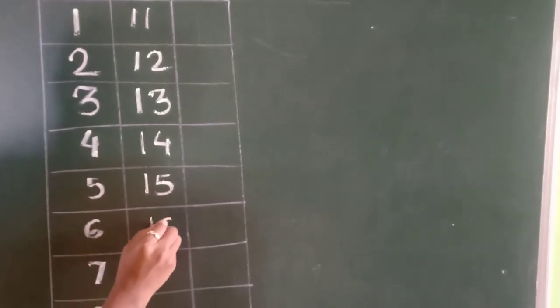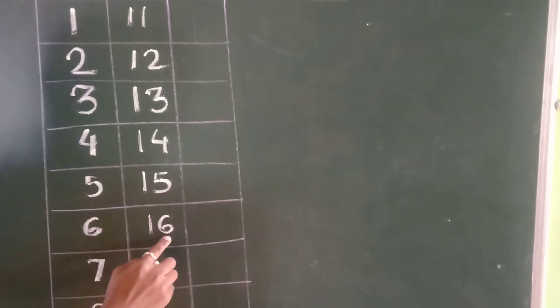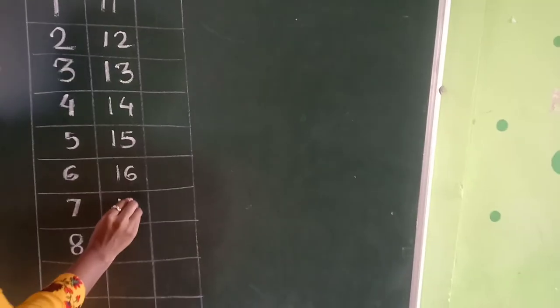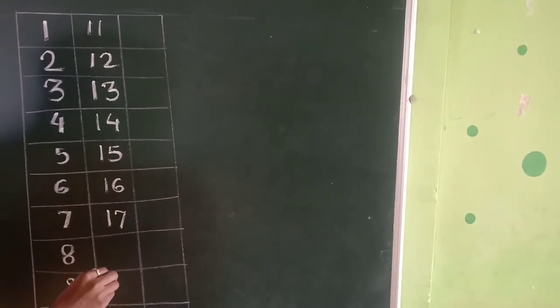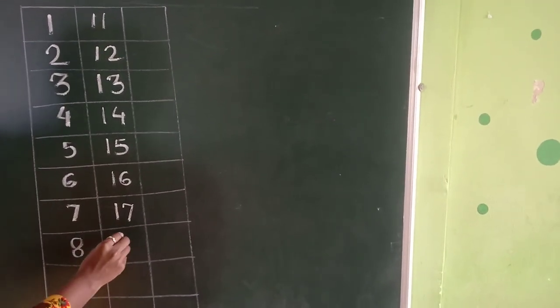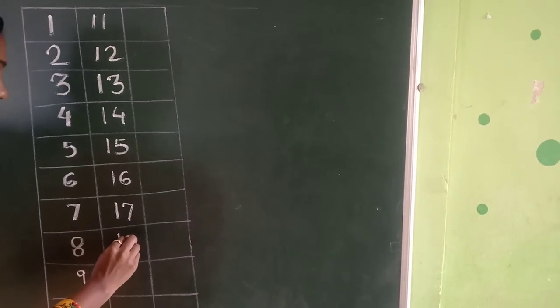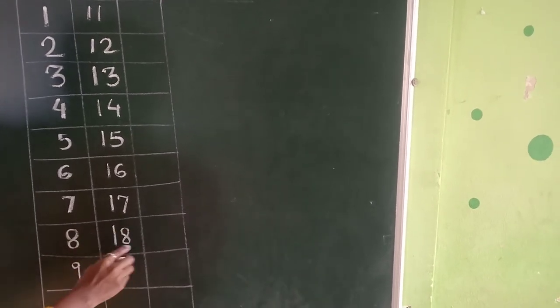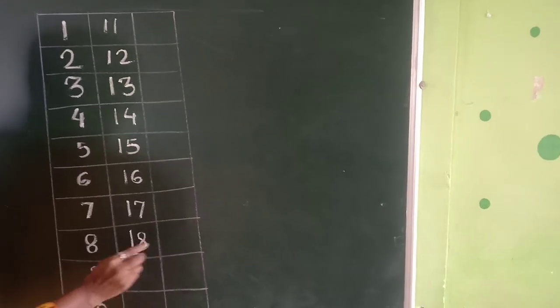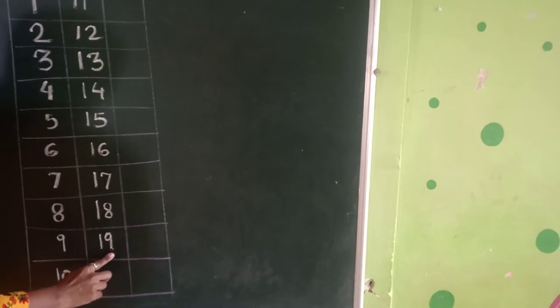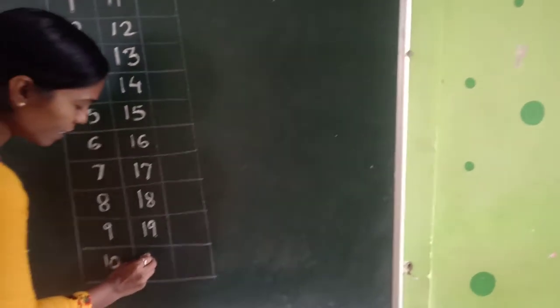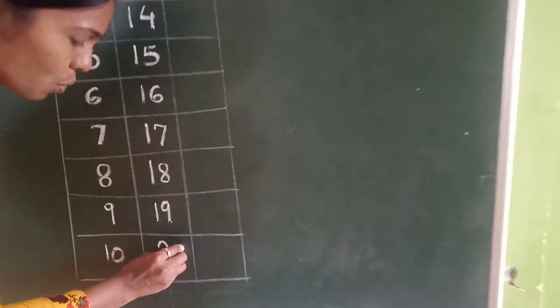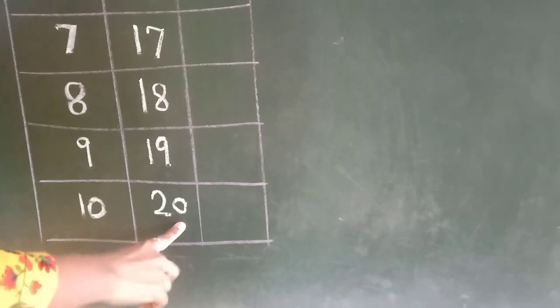After that 1, 6, 16. Then next number is 1, 7, 17. Then 1, 8, 18. Then 1, 9, 19. And this is number 2, 0, 20. Okay students?